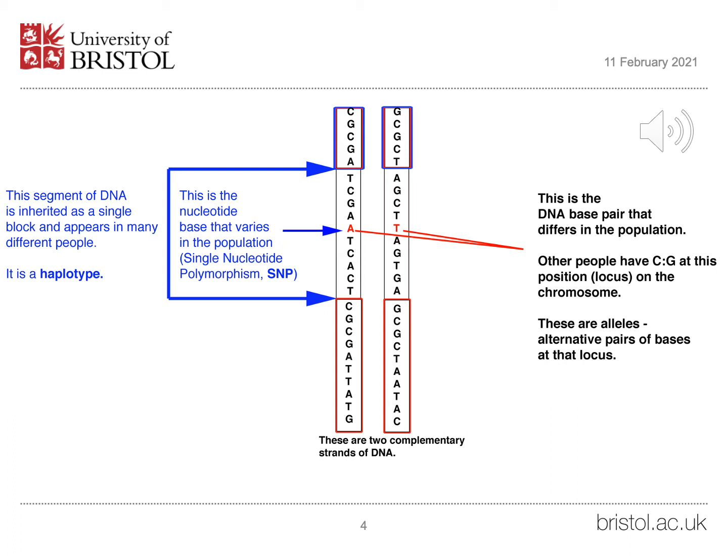Many haplotypes are inherited through the generations as a single unit. Ancestry studies such as those undertaken by 23andMe use internationally recognised haplotypes as a correlation with ethnic group. Both SNPs and haplotypes are sometimes called alleles. To simplify this, this presentation will use the term DNA variant to include SNPs, haplotypes, and alleles.